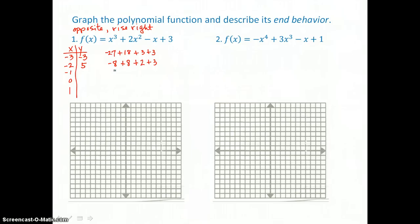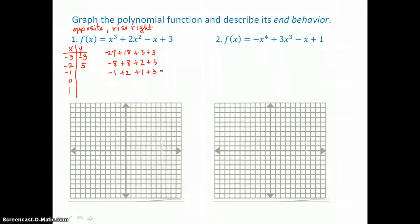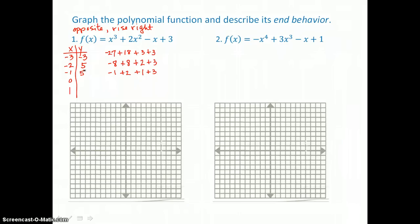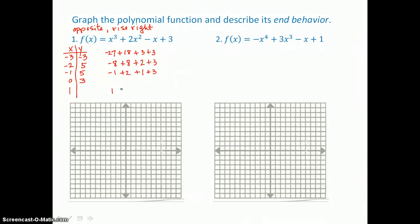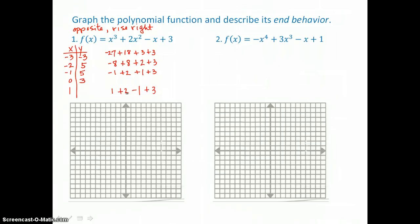Negative 1 cubed is negative 1; negative 1 squared is 1, and 1 times 2 is 2; minus a negative 1 is plus 1, plus 3. My positives total 6, and 6 minus 1 is 5. Putting 0 in for x, the first three terms are 0, so y equals 3. For x equals 1: 1 cubed is 1, 1 squared is 1, and 1 times 2 is 2; minus 1, plus 3 — again totaling 6 positives, minus 1 is 5 for a y value.